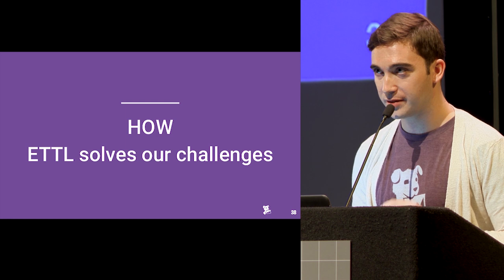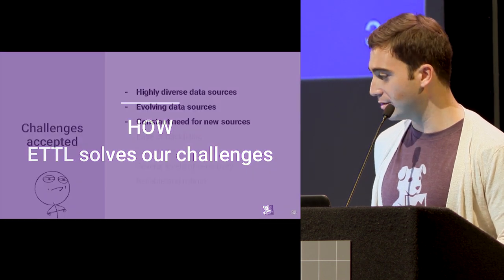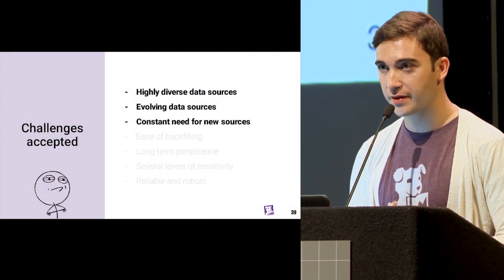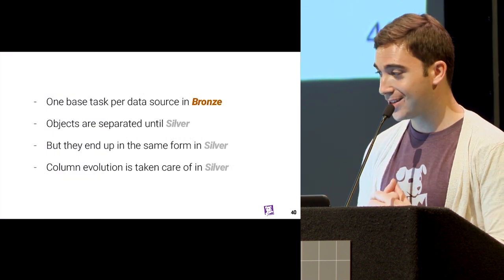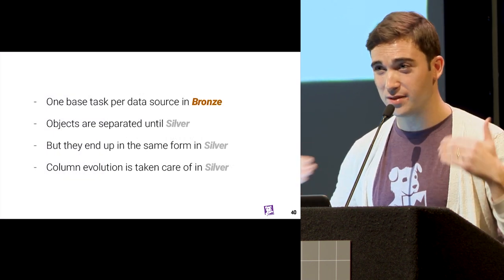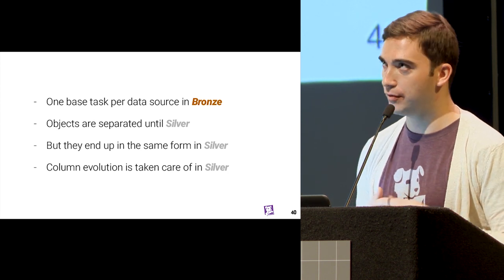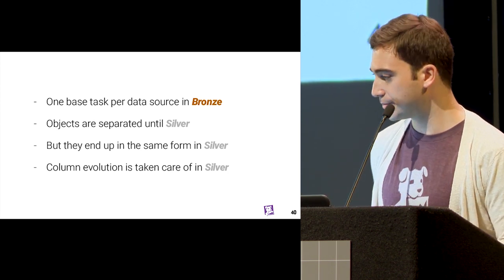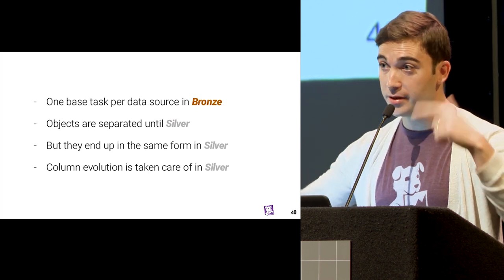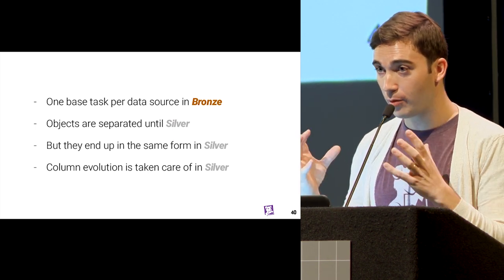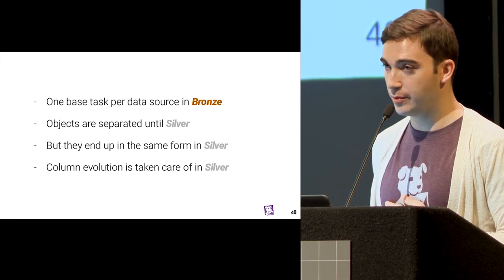Now you know what the ETTL design looks like — but how does it solve the challenges presented at the beginning? Data sources are highly diverse, always evolving, and we always need to add new ones. Well, we have one base type per data source in bronze, so it's easy to add new objects to ingest. If we need to develop a new API extract with a new tool it takes a little more time, but it doesn't happen often. Each object we extract is completely isolated until silver, where we know it ends up in a format ready to be used and reused downstream in the pipeline.